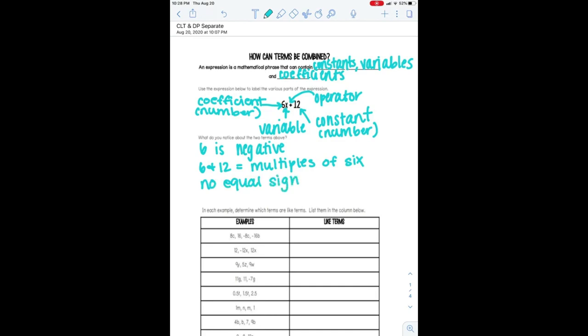An expression does not have an equal sign. If there is an equal sign, that is an equation. So expressions have no equal sign. Equations have equal signs. So now we're going to look at this table down here. And we are going to talk about something called like terms, okay?